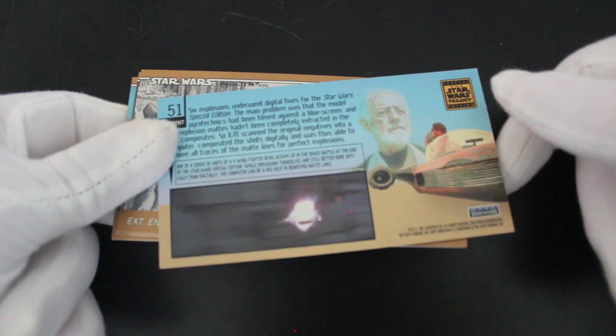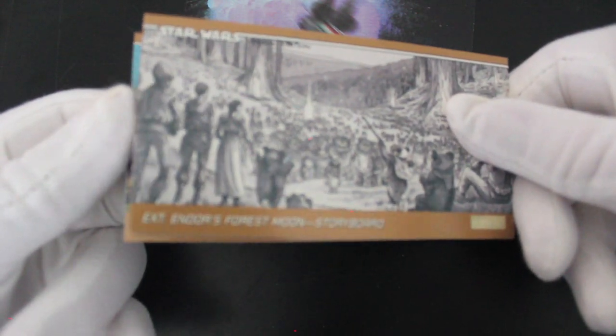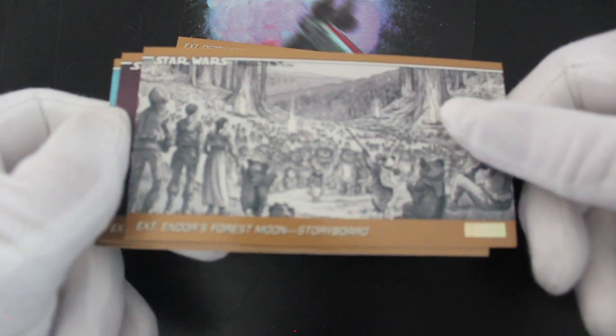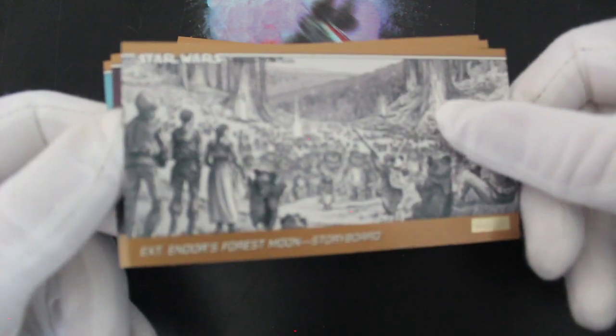Nice picture of Obi-Wan, one speeder. Oh look at this, storyboard cards. Now this is good. I like this. Exterior, indoor forest moon storyboard. Yeah, I like a bit of artwork.